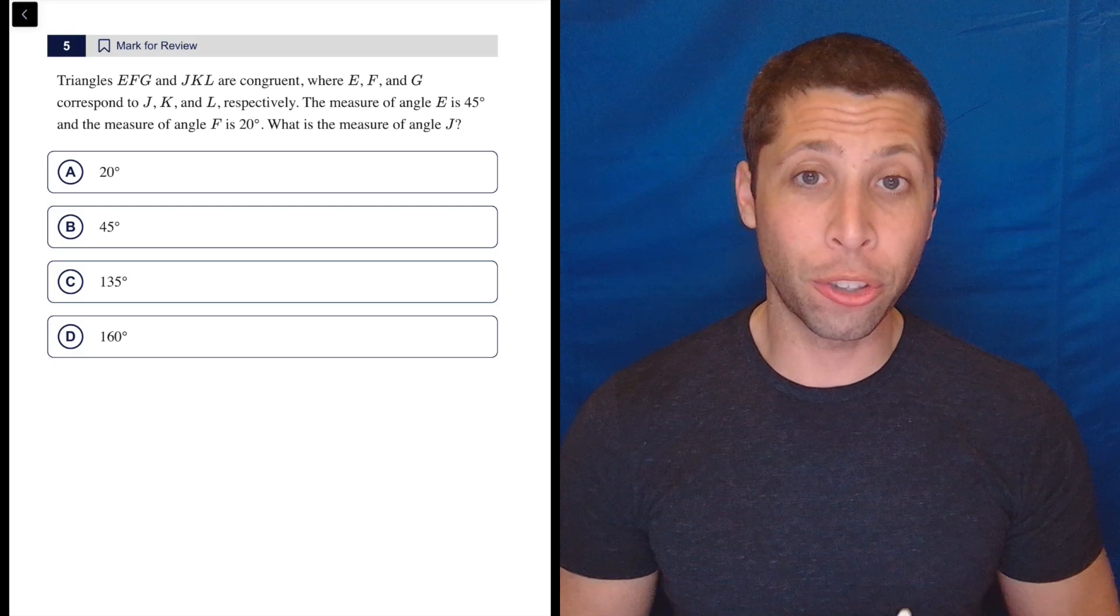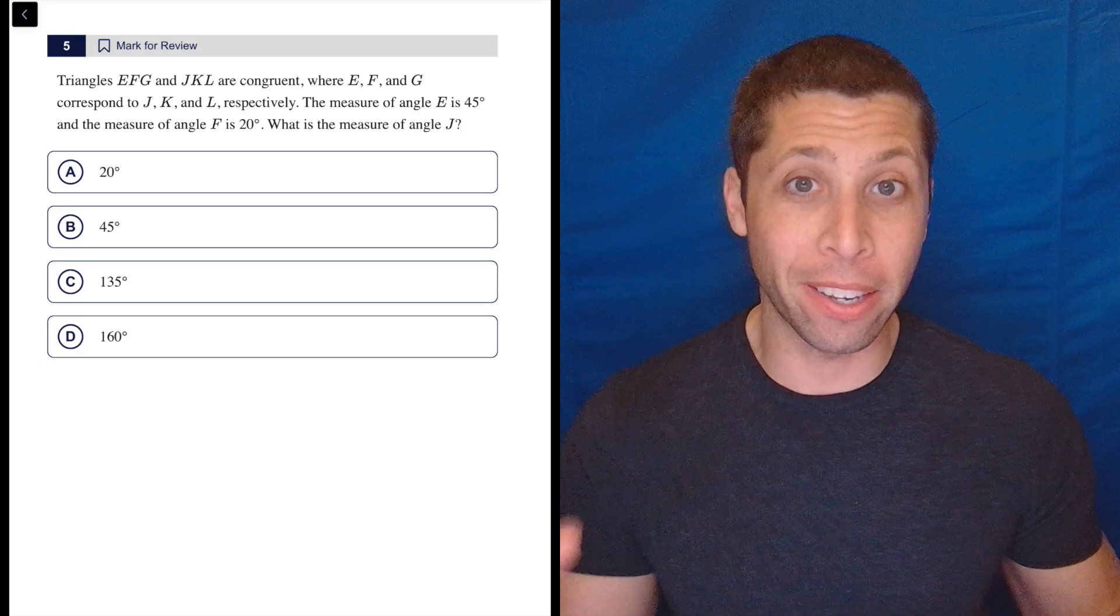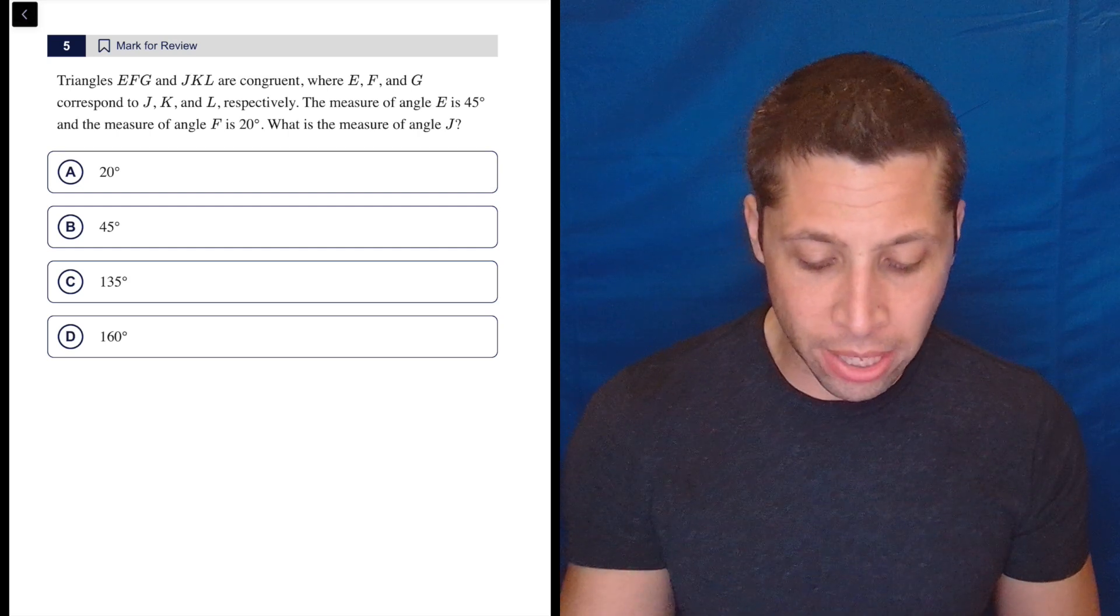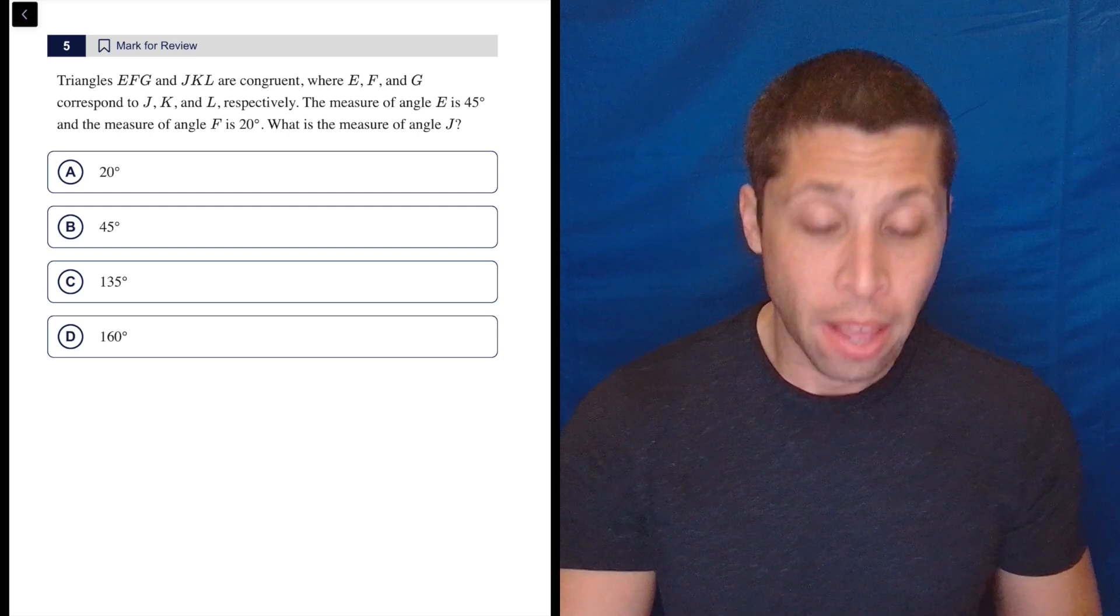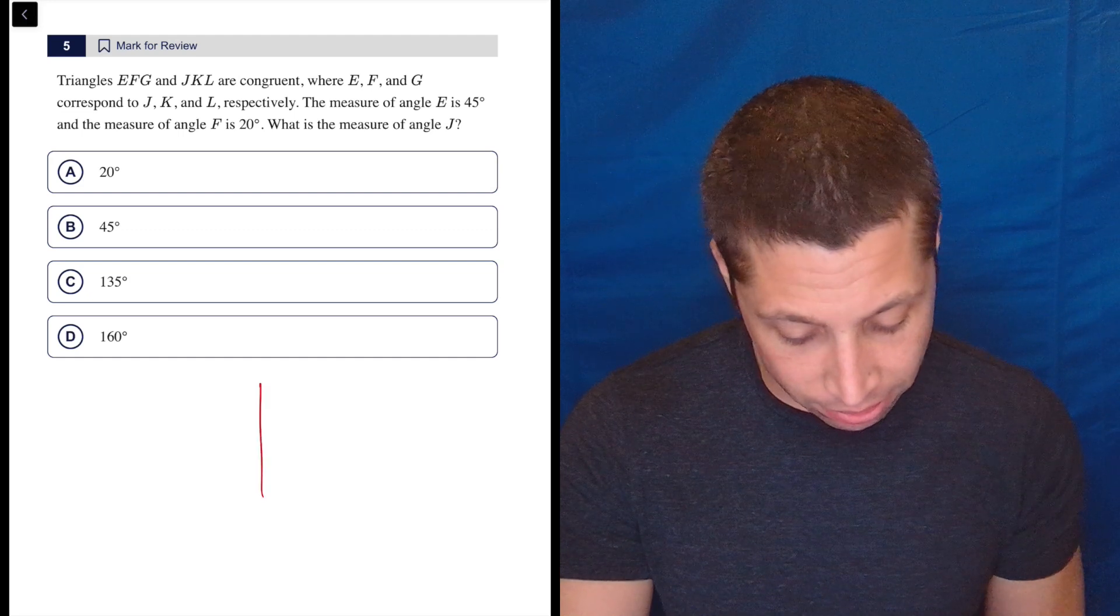So for a question like this, I would just draw one triangle and make sure that I understand how everything relates because literally everything will be kind of double labeled on this triangle, right? So triangles EFG and JKL are congruent. That means that everything about them is the same anyway. So that's good that I have one triangle. I really just want to see it as such.